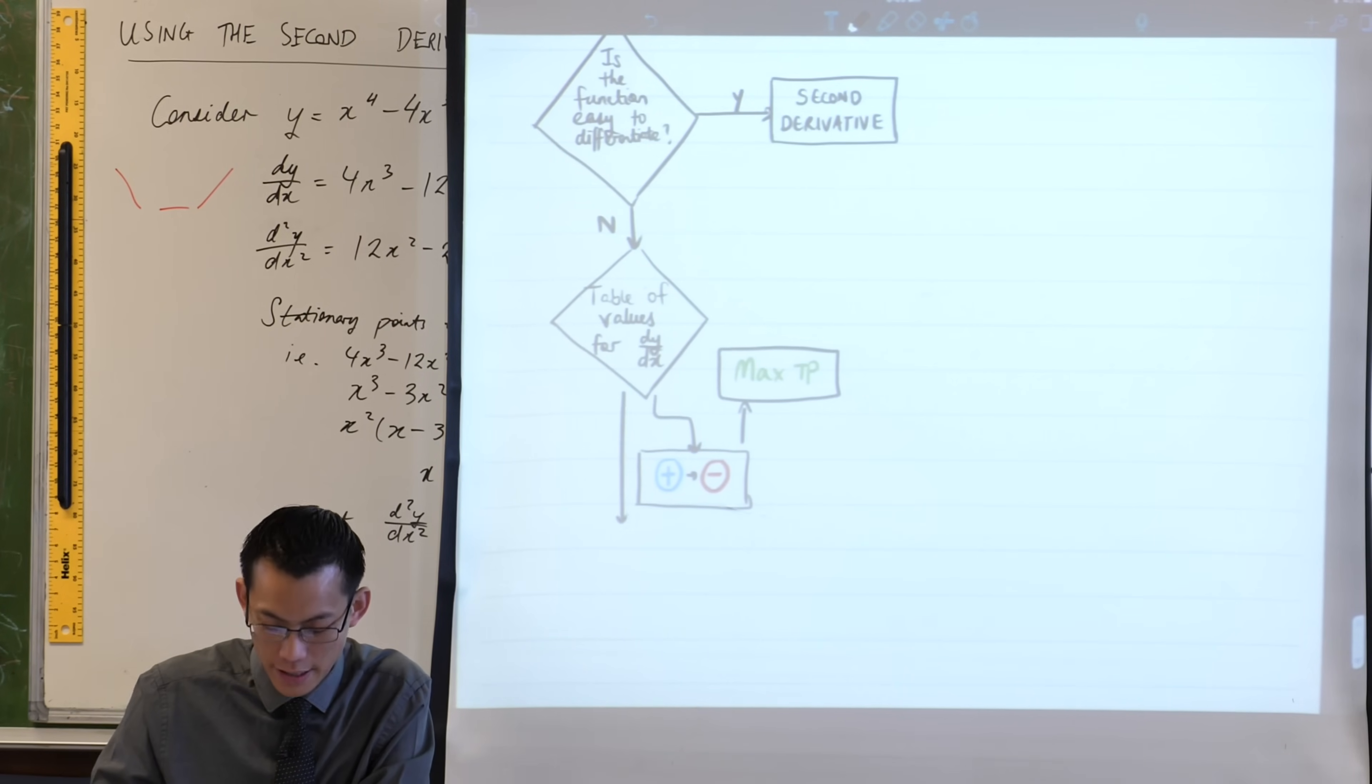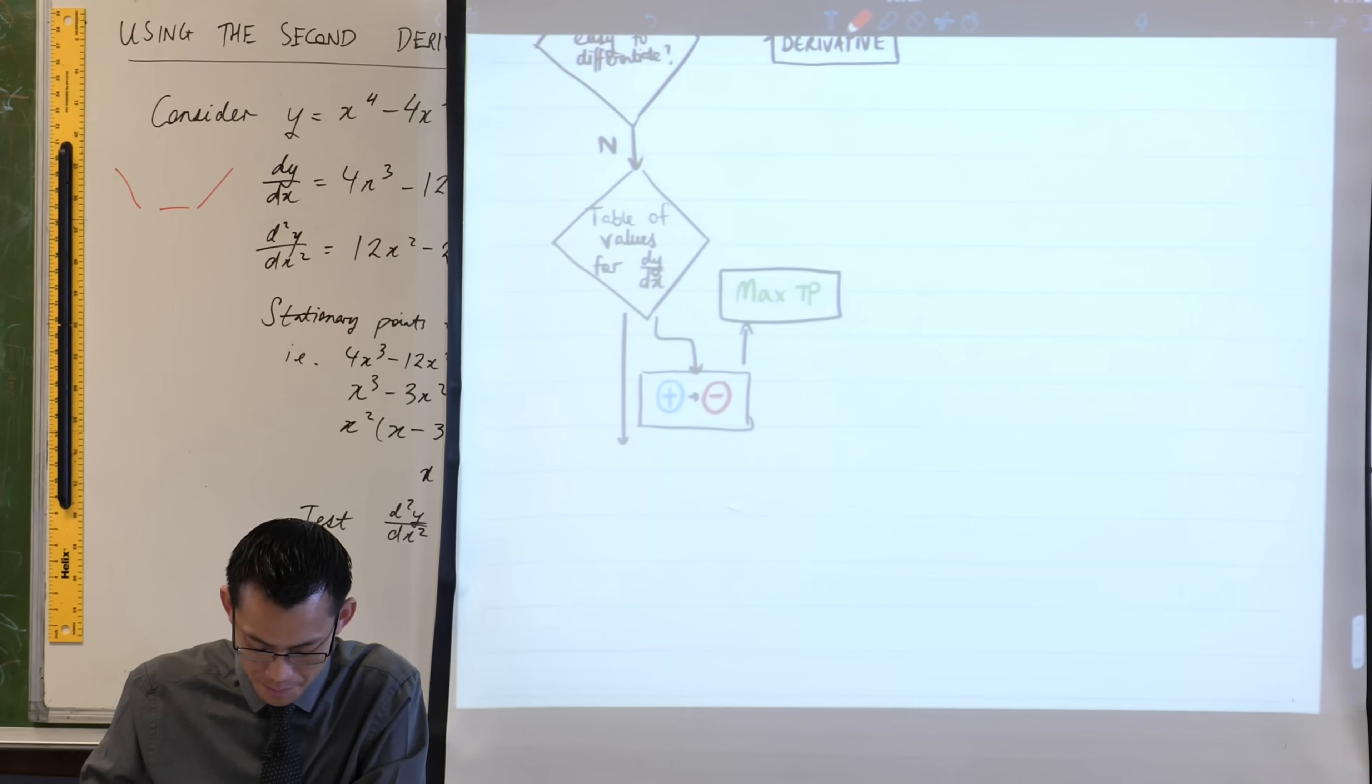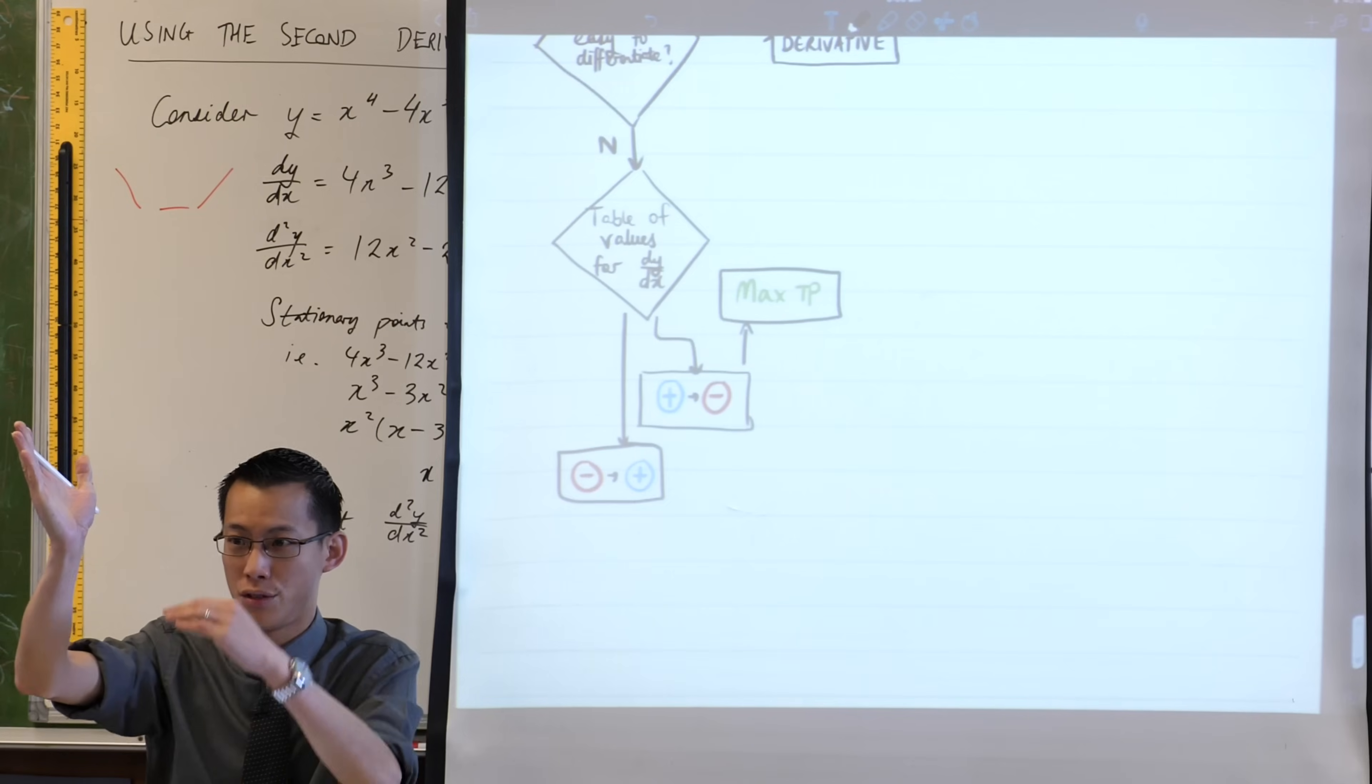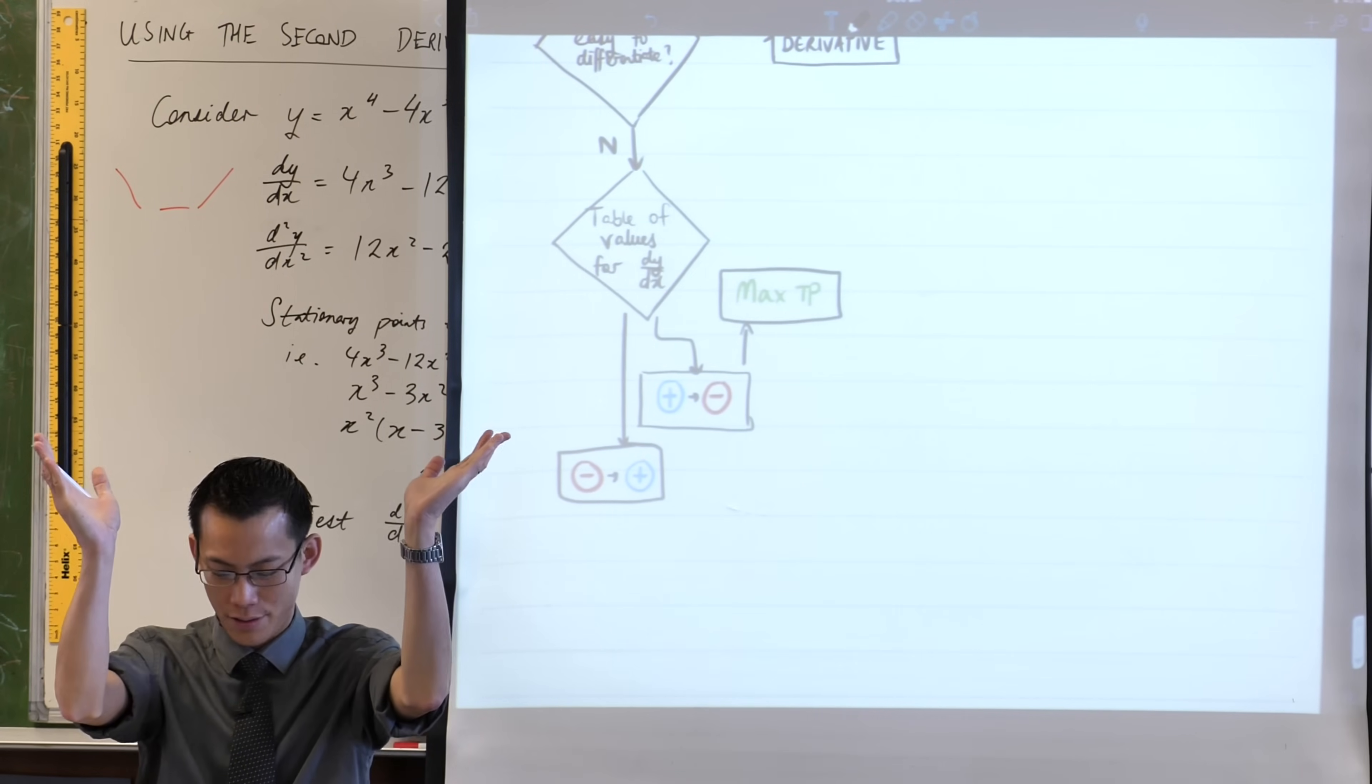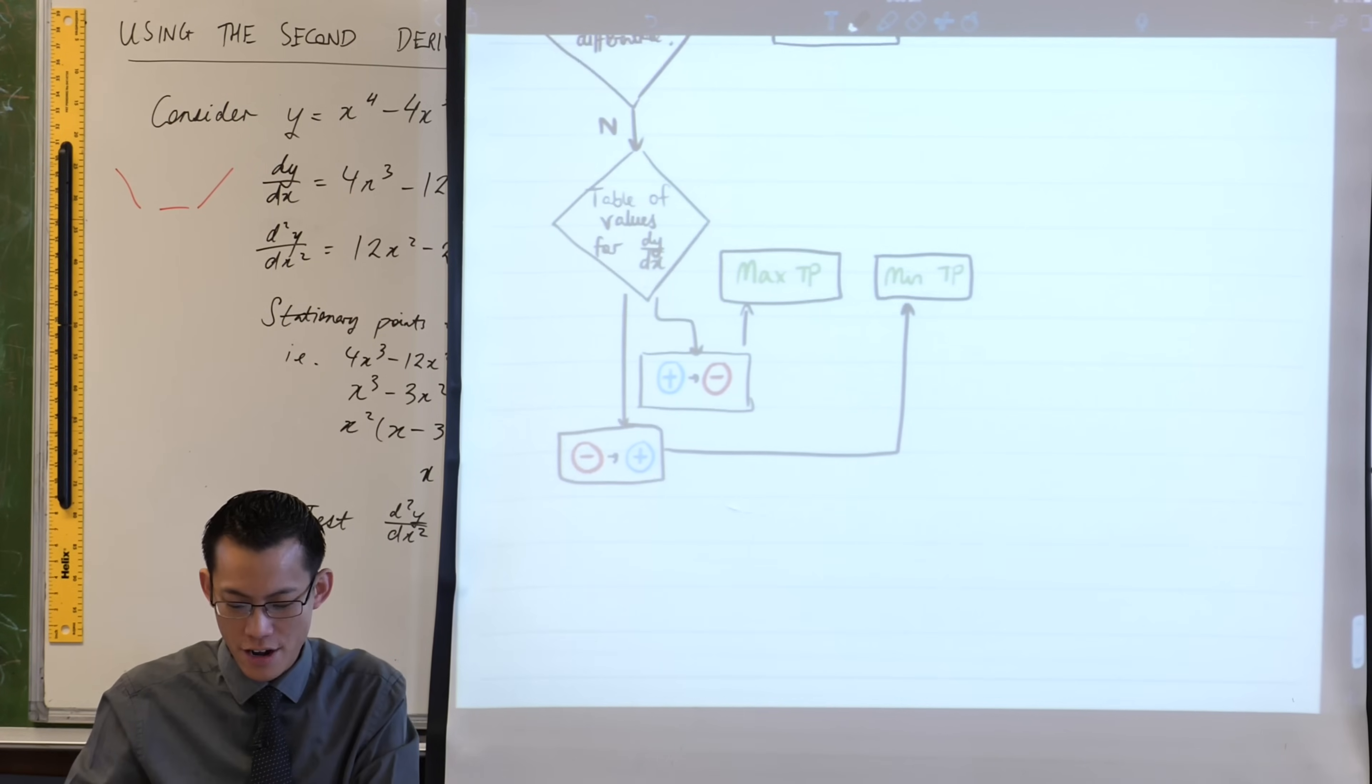Alternatively, something else might happen. You might not go from positive to negative, you might have that in reverse. If you went from negative to positive, this is decreasing, stationary, increasing. So what kind of turning point is that? That's a minimum. So let's put that guy over here, so then I know that's what's happening.